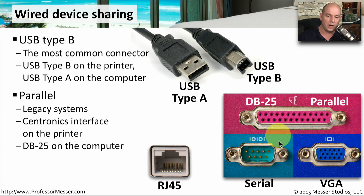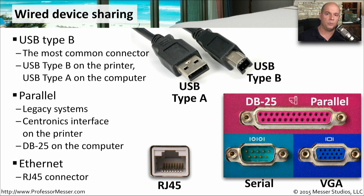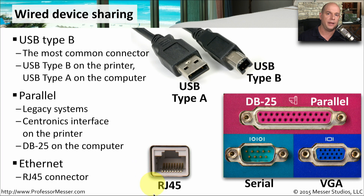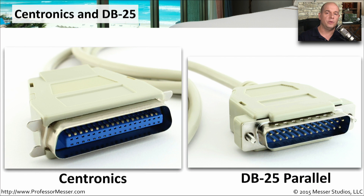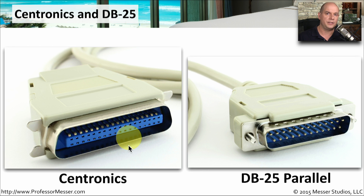With a parallel connection, you'll need a DB25 parallel port on your computer and a Centronics connection on the printer. If your multi-function device supports a network connection, it probably has an RJ45 connection on the back and you can plug it directly into the Ethernet network so everybody can access the device across the network. Here's a better view of the parallel cable — the DB25 parallel connection on the computer side and the larger Centronics connector on the legacy printer side.